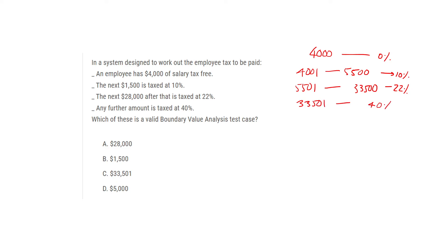So the boundaries are: 0% up to 4,000; 10% from 4,001 to 5,500; 22% from 5,501 to 33,500; and 40% from 33,501 and above. He is asking which of these is a valid boundary value analysis test case. 28,000 is nowhere in the boundaries — wrong answer. 1,500 is also nowhere in the boundaries — also wrong.